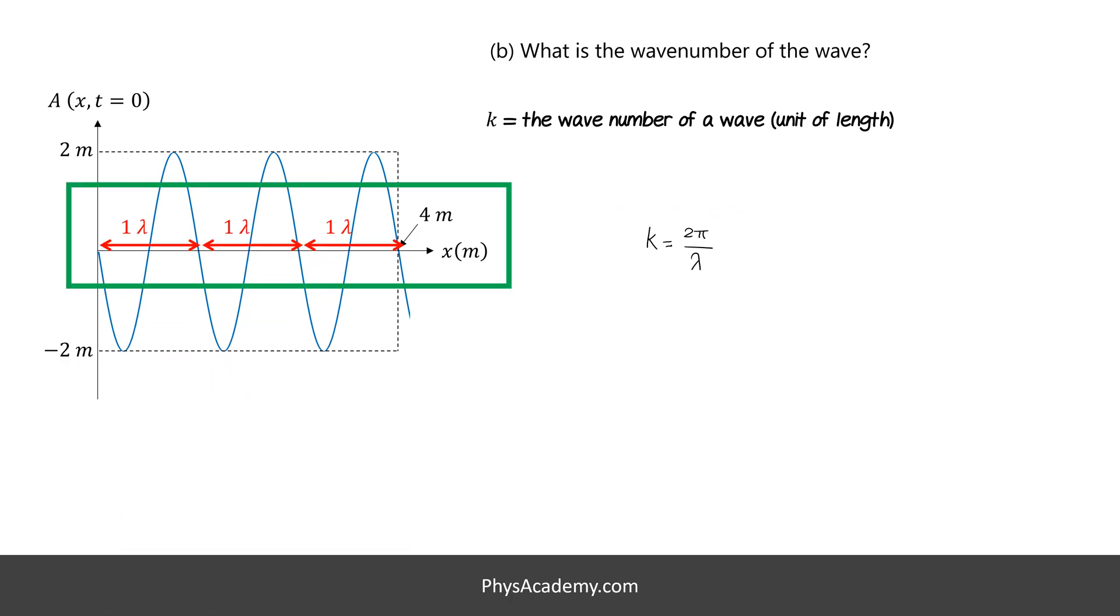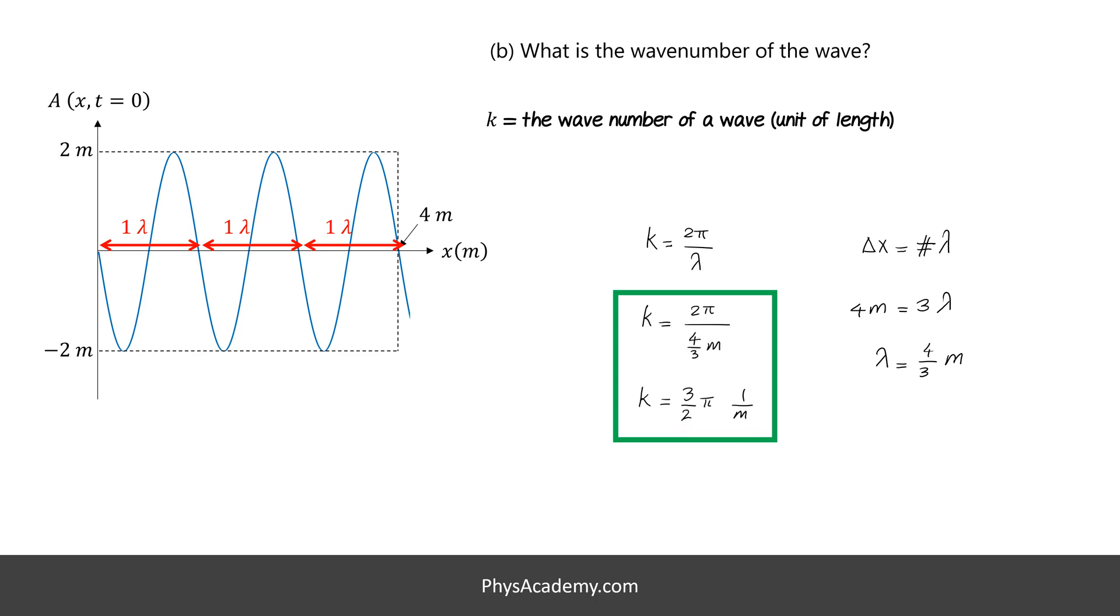By analyzing the snapshot of the wave plot, we see 3 wavelengths in 4 meters. Let's write this down in a mathematical format. Here, delta x is 4 meters. The number sign is the number of wavelengths in 4 meters, or 3 here. After plugging in the numbers, for the wavelength, we get 4 meters divided by 3. After plugging the wavelength back into the wave number equation, we get 3 pi divided by 2. The unit of the wave number is 1 over meters, or inverted meters. Again, you could find the final numerical value, but I'll leave it as it is.